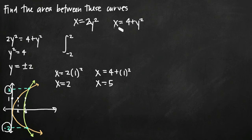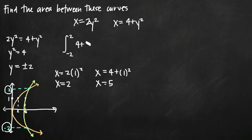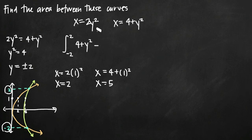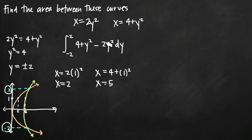This tells us that the second curve is the rightmost curve — it's farther out to the right. So that goes first inside our integral: 4 plus y squared. Then because we got the lesser value x equals 2 when we plugged 1 into the first curve, we subtract that curve: minus 2y squared. And then we're integrating with respect to dy, with limits of integration y equals negative 2 and y equals positive 2.